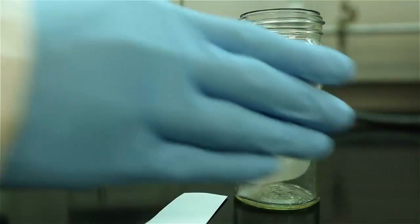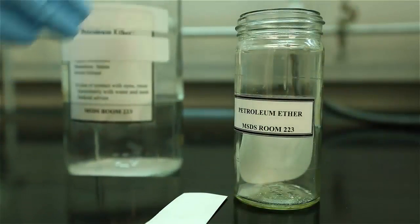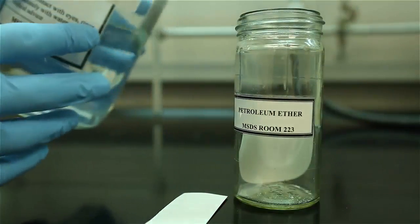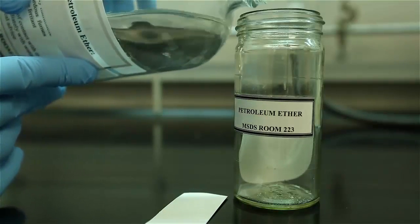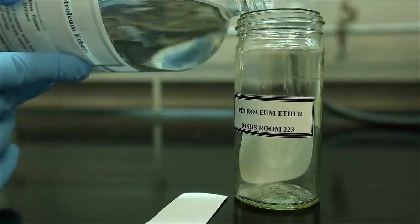You will be using a jar as a TLC chamber where the TLC plate develops. When you acquire a jar, be sure to check the depth of eluent to be approximately 0.5 to 1 cm and add more eluent as necessary.